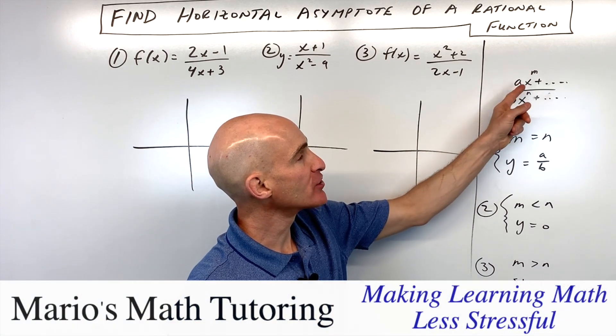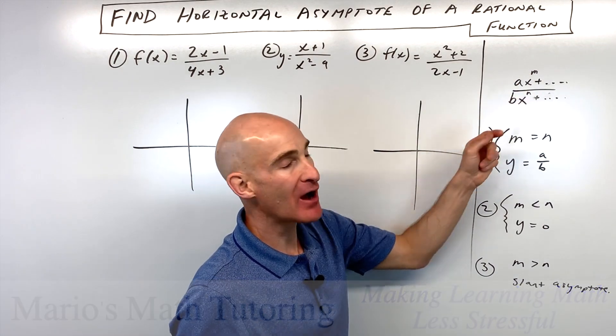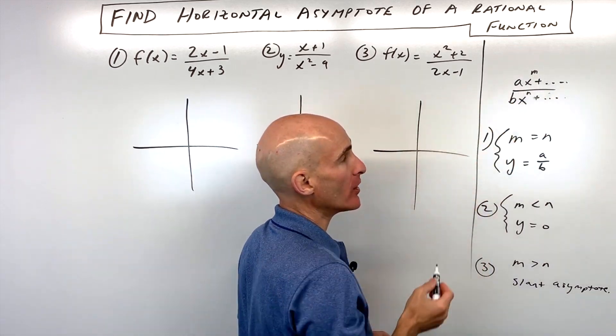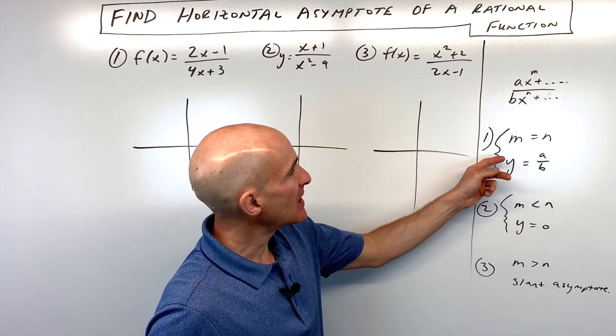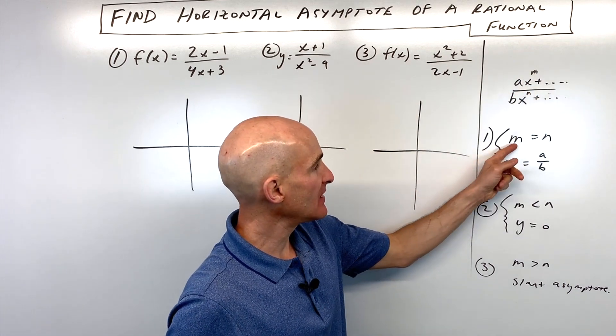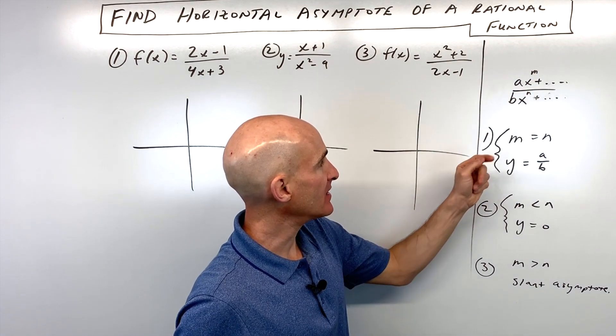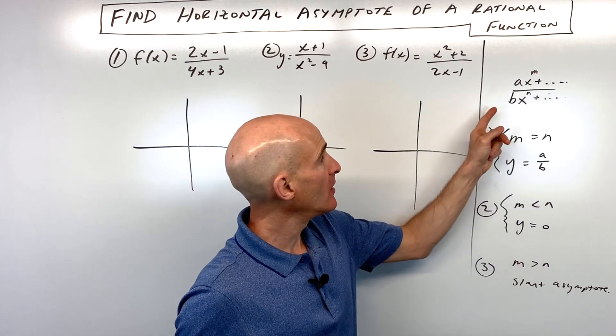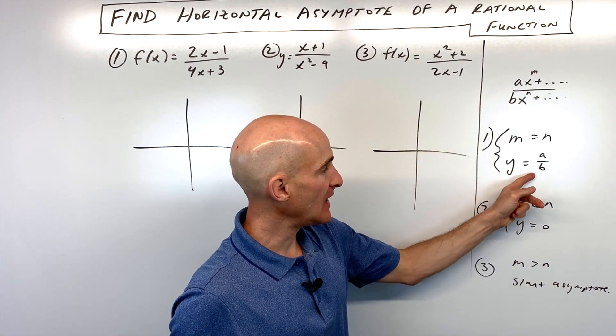You want to look at the highest powered term in the numerator and the highest powered term in the denominator. So that's the one with the highest exponent. And what you do is you look and you say, well, if the exponents are the same, meaning that m equals n in this example here, then the horizontal asymptote is going to be the ratio of those two coefficients. It's going to be a divided by b.